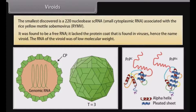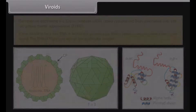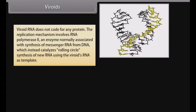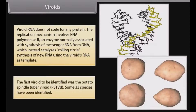It was found to be a free RNA that lacked the protein coat found in viruses — hence the name viroid. The RNA of the viroid was of low molecular weight. Viroids were discovered and given this name by Theodore Otto Diener, a plant pathologist at the Agricultural Research Service in Maryland, in 1971. Viroid RNA does not code for any protein. The replication mechanism involves RNA polymerase II, an enzyme normally associated with synthesis of messenger RNA from DNA, which instead catalyzes rolling circle synthesis of new RNA using the viroid's RNA as a template. The first viroid to be identified was the Potato Spindle Tuber Viroid (PSTVd); some 33 species have been identified.